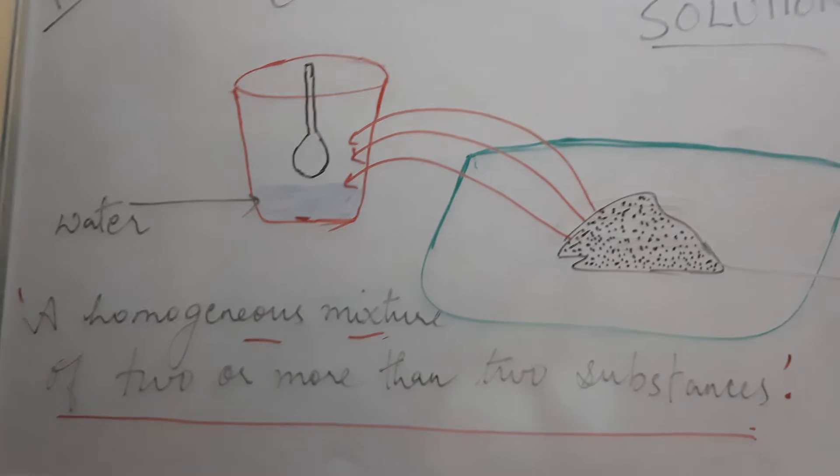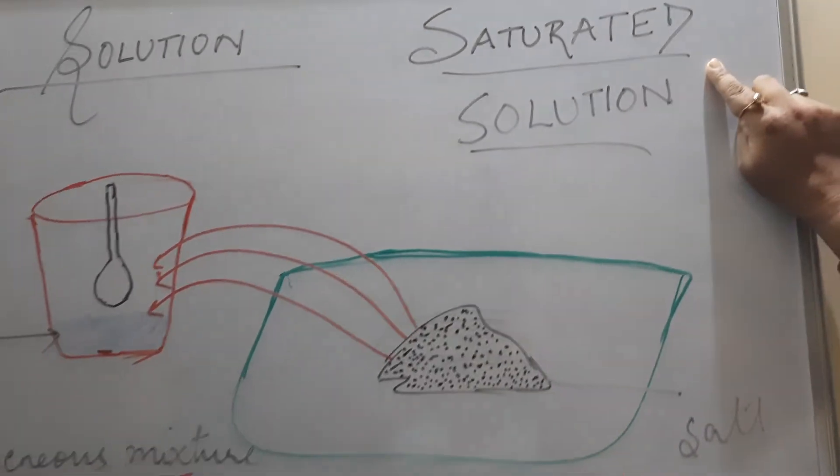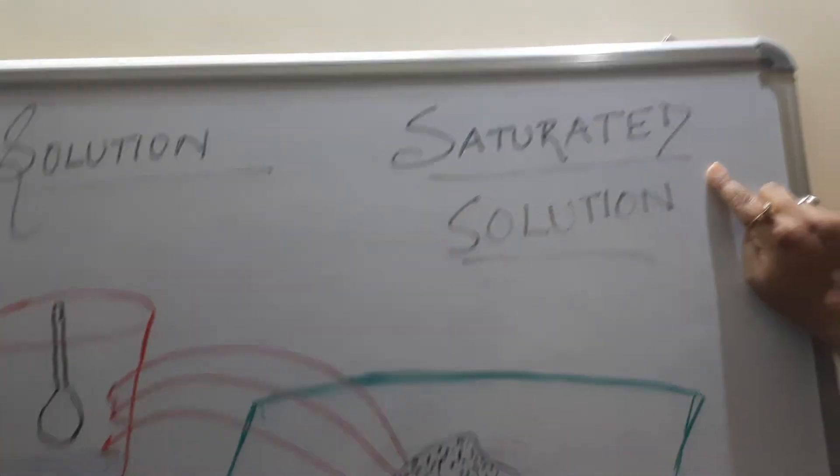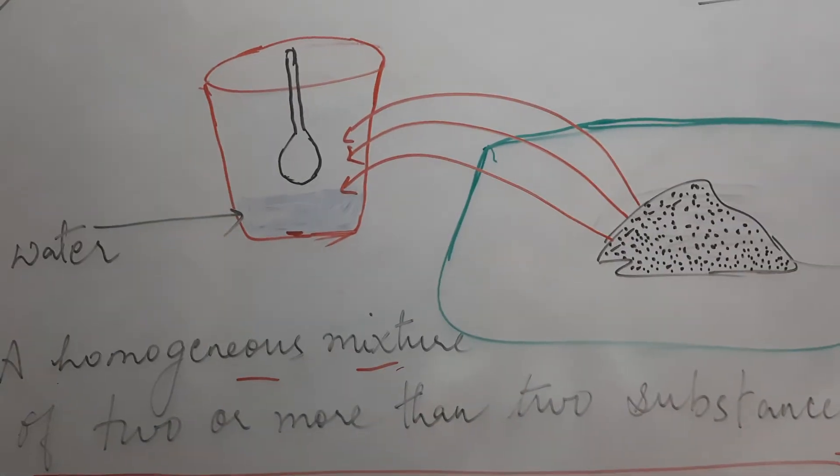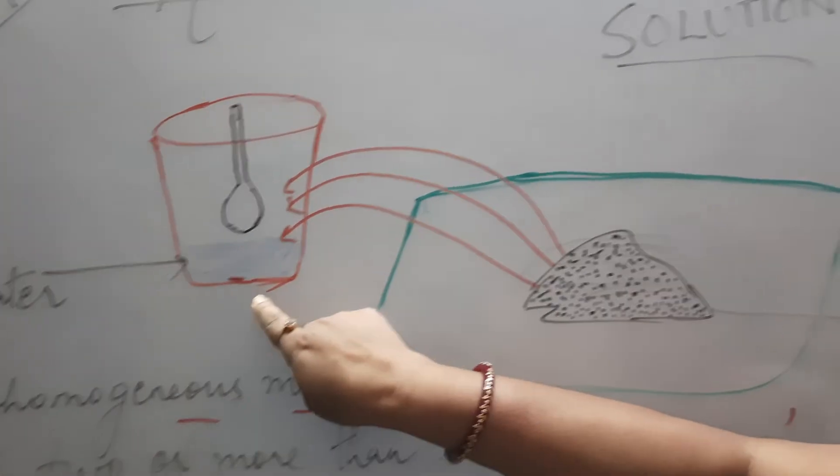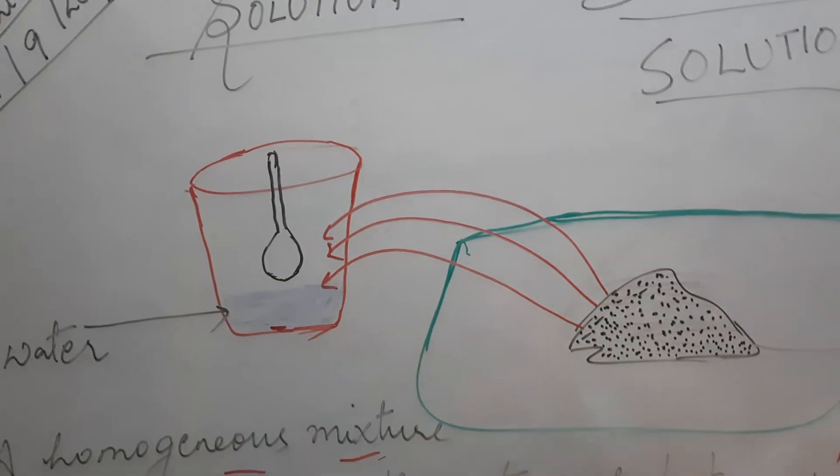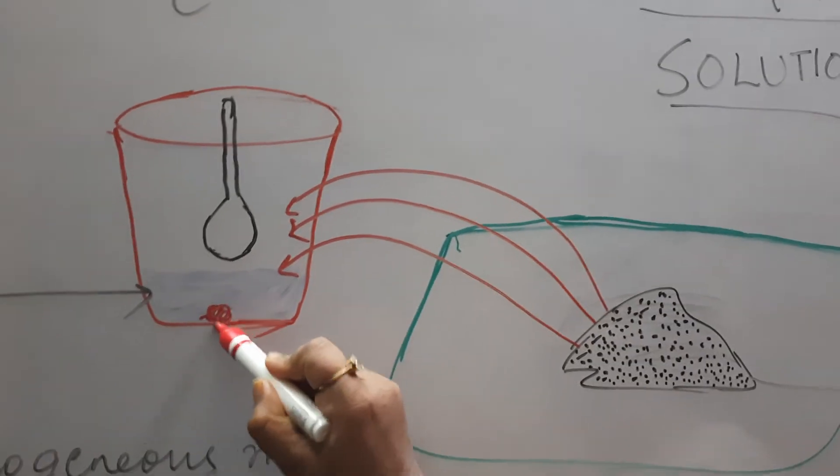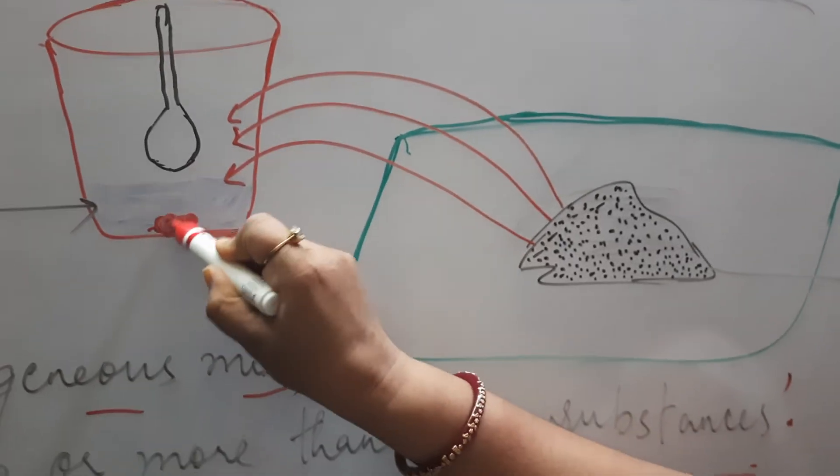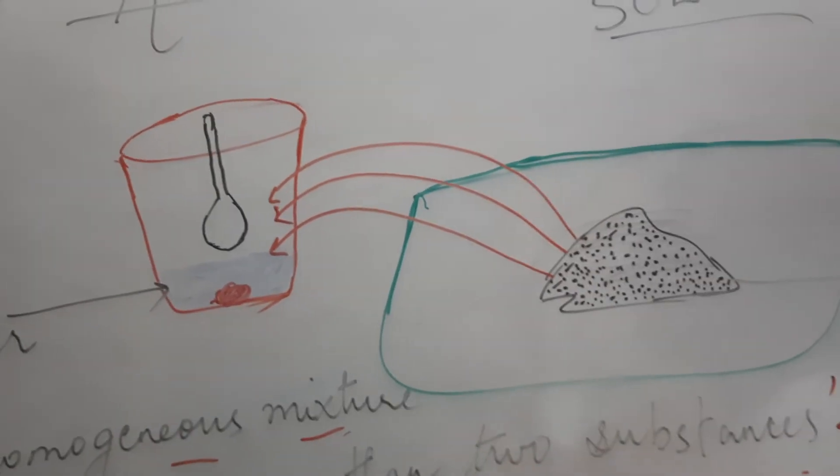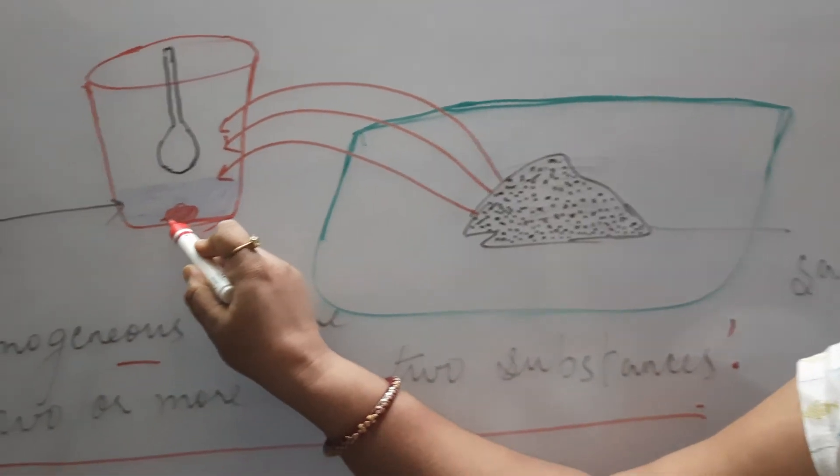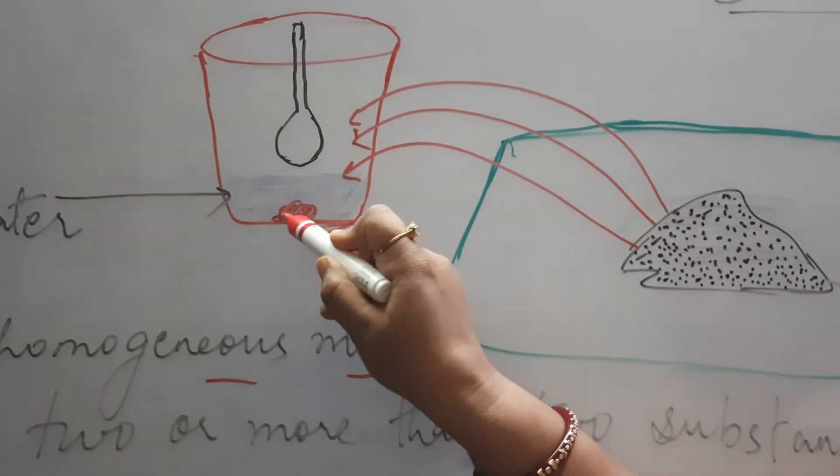Now children, my second definition comes over here, saturated solution. Here what did I say? A point comes when salt stops being added into water and it gets settled at the bottom. When you want to add more salt, the water does not allow that salt to mix with it, and the salt settles at the bottom.